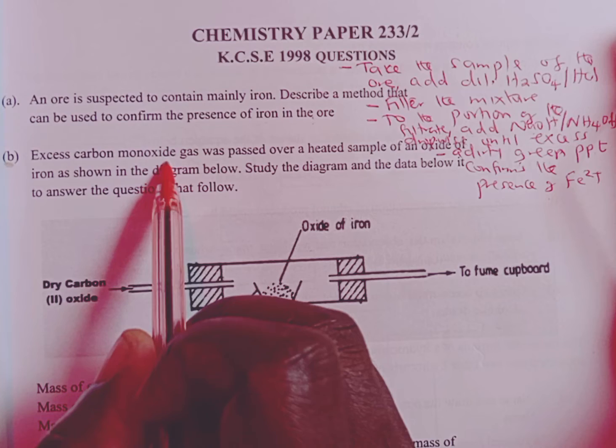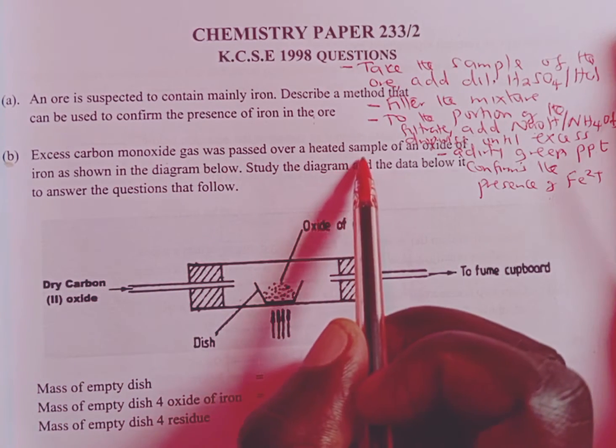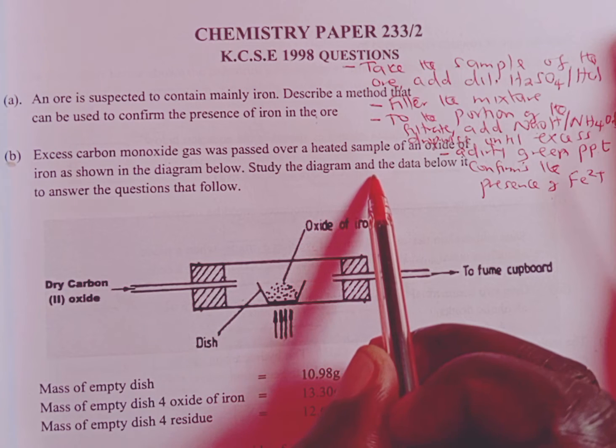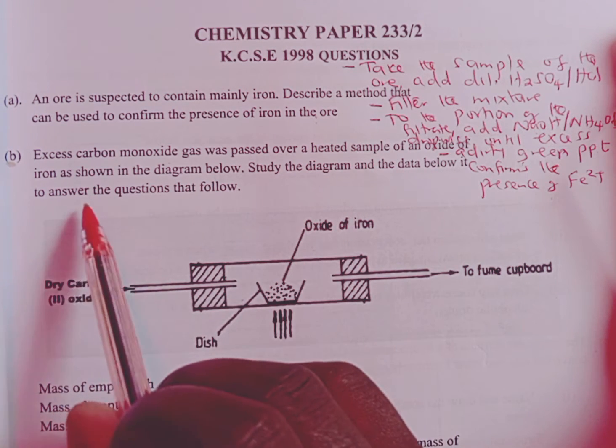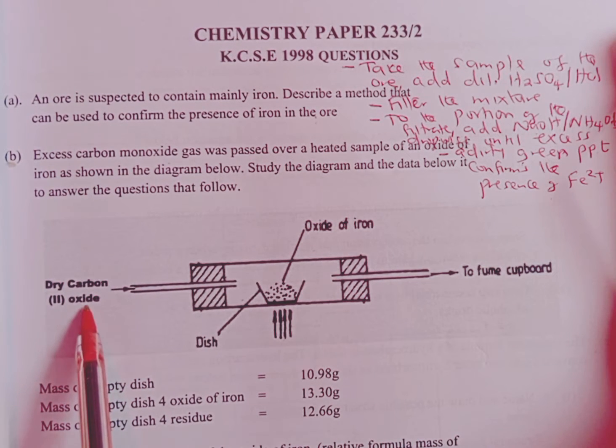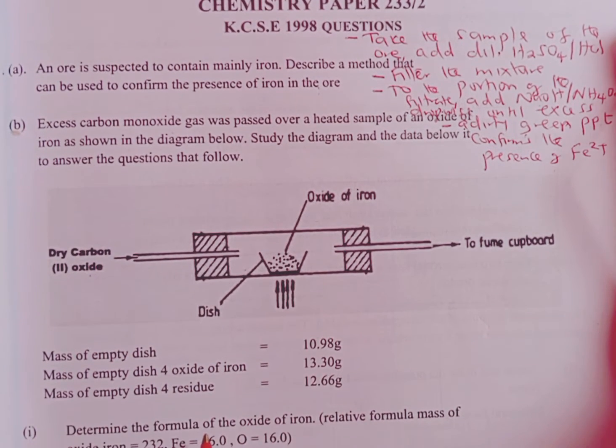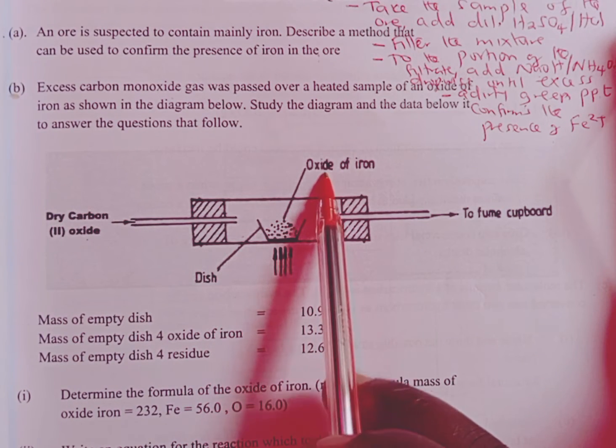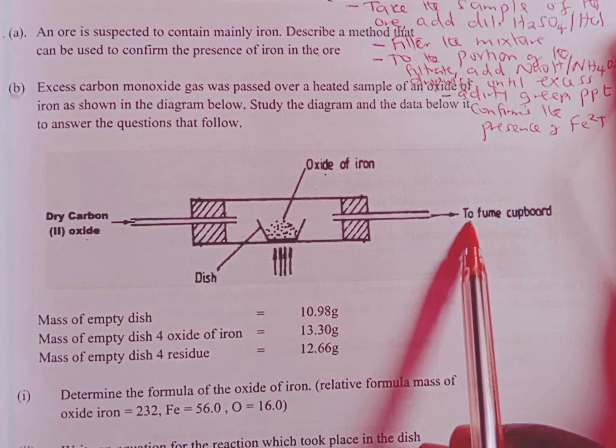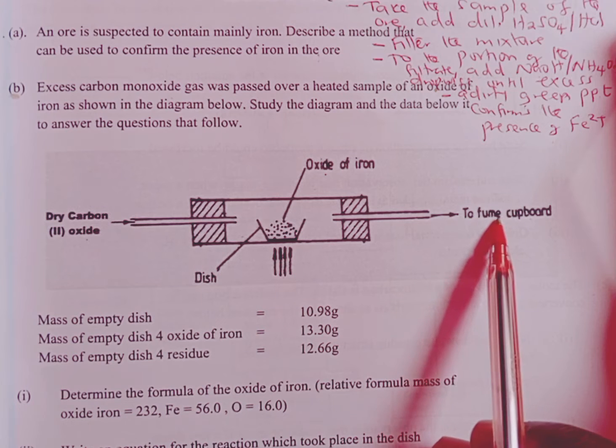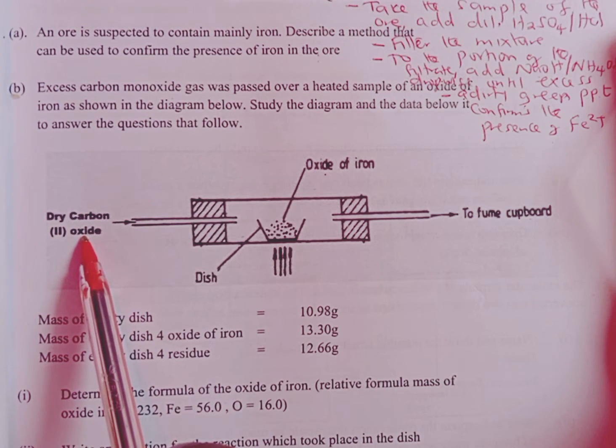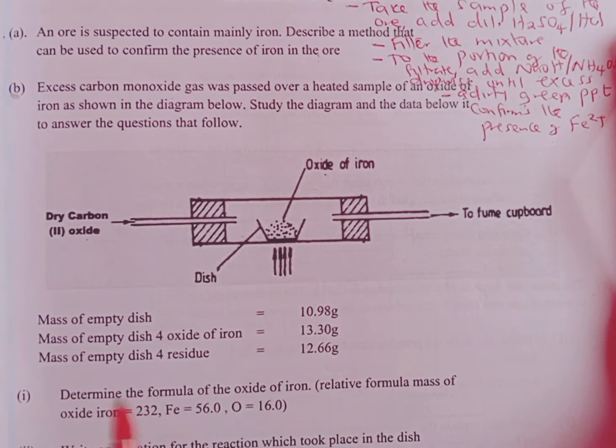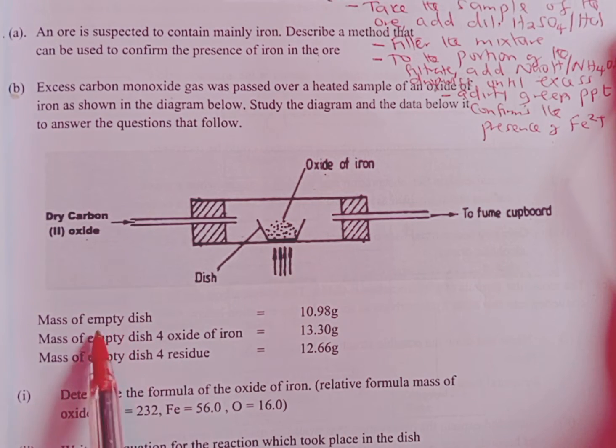We go to part B of the question. Excess carbon monoxide gas was passed over a heated sample of an oxide of iron as shown in the diagram below. So study the diagram and the data below to use it to answer the questions that follow. We have carbon dioxide going through the combustion tube containing an oxide of iron. Then we have gases that are going through the fume cupboard. Remember what is going through the fume cupboard is excess carbon dioxide. And that is gotten after the oxide has been completely reduced.